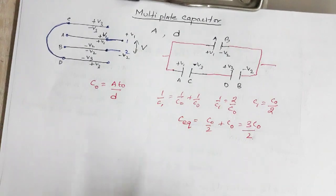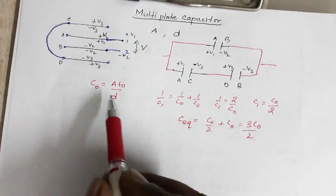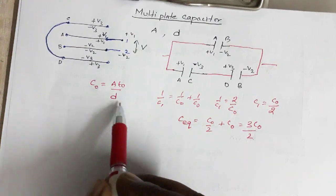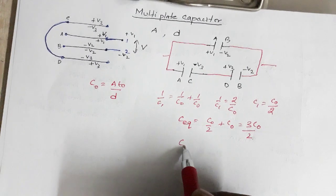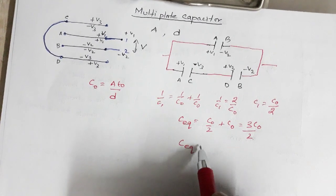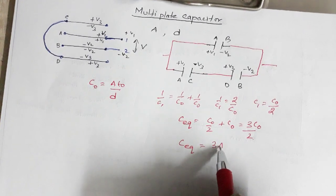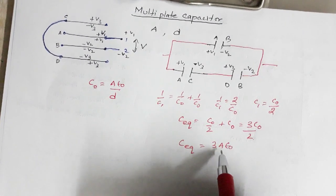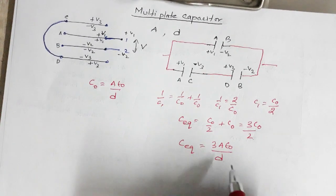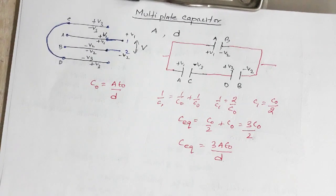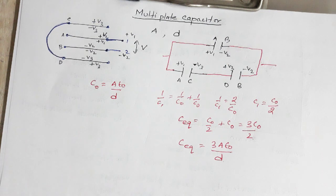Substituting C0 = Aε₀/D, the equivalent capacitance of the entire system is C_equivalent = 3Aε₀ / (2D).